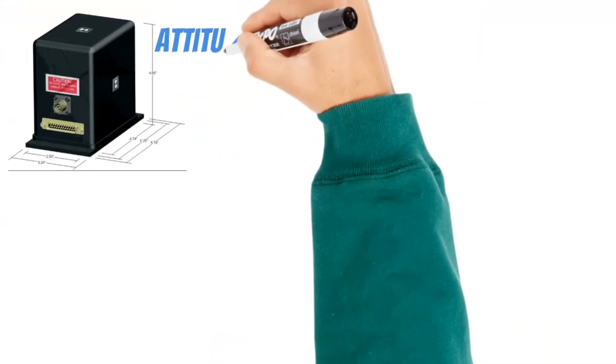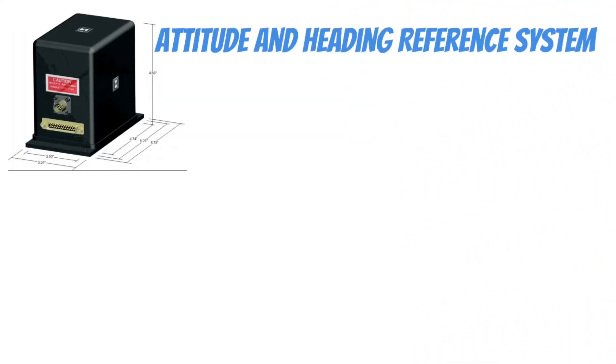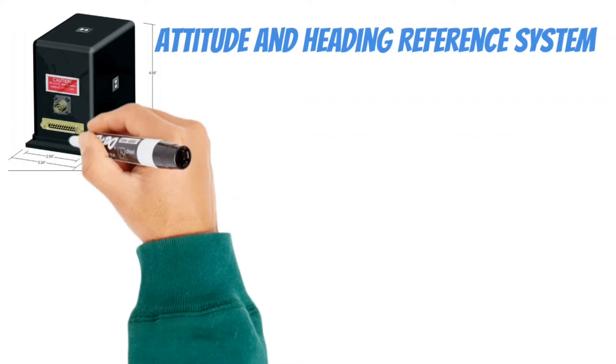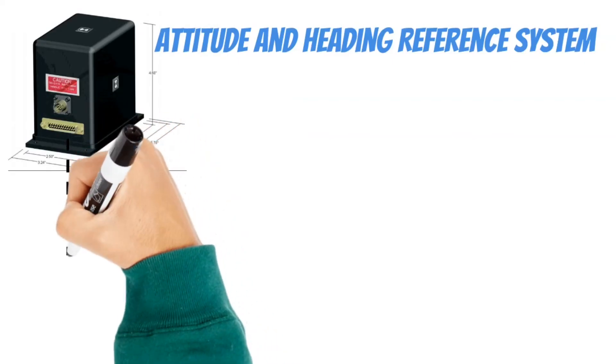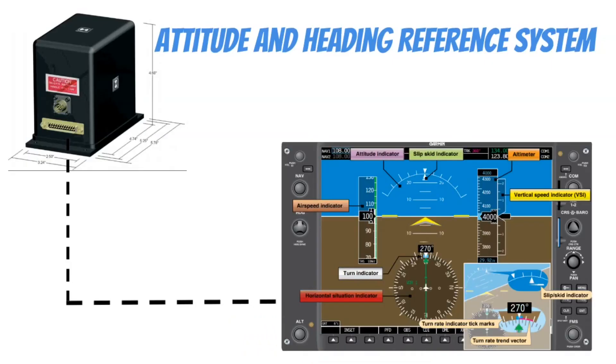On these newer systems, they have something called an attitude and heading reference system, also known as AHRS. Inside of these magical boxes, they use solid state lasers to sense the pitch and bank of the airplane. This information is then sent to the primary flight display so it can be used by the pilot. And because these instruments use lasers instead of free-spinning gyros, they don't tumble. Welcome to the future of aviation, for those who can afford it that is.